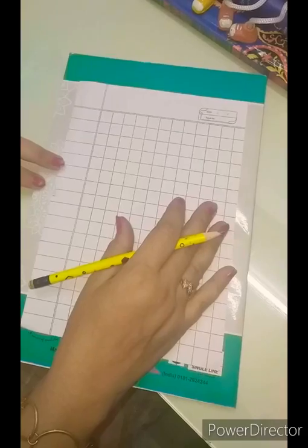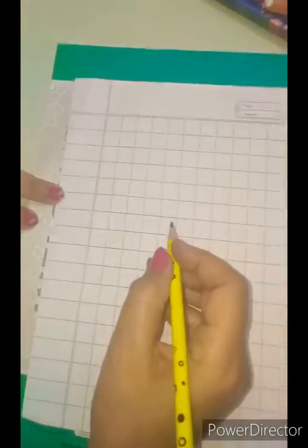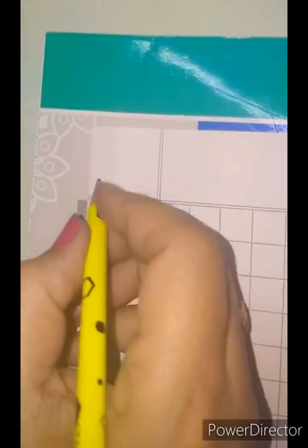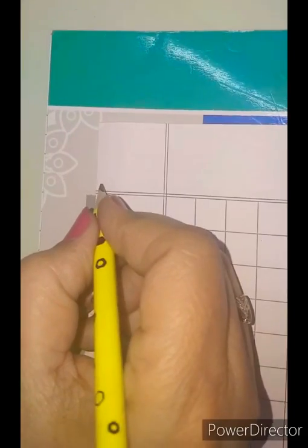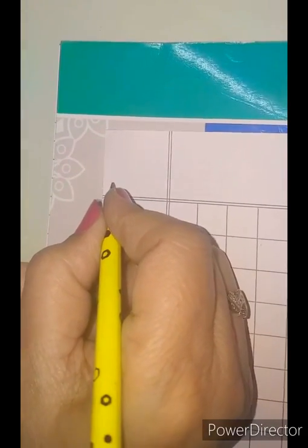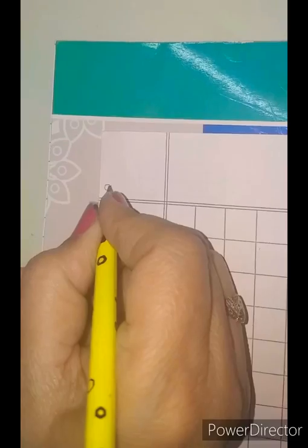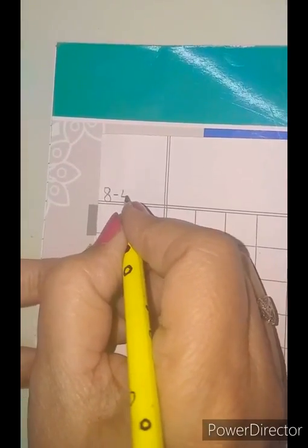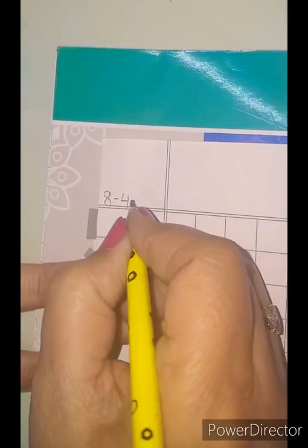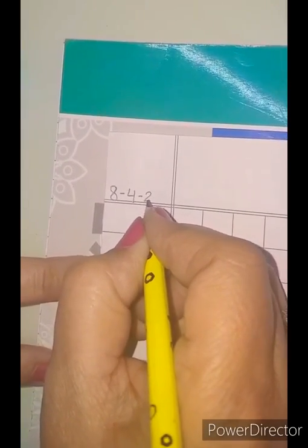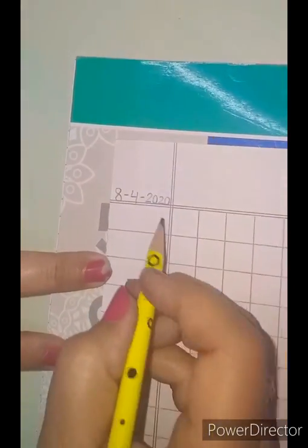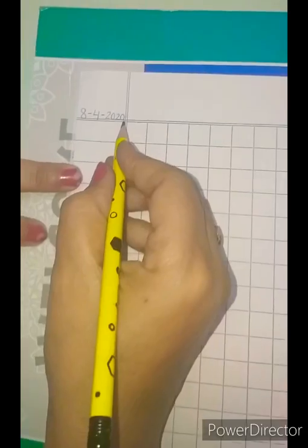First of all, we have to learn how to write the date. Now, start from this block. Write down the date. Today is 8th. Write down 8, sleeping line, 4, sleeping line, 20. You have to finish the date in this block.